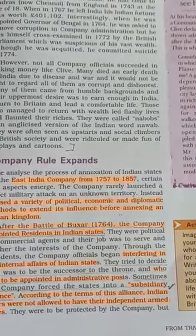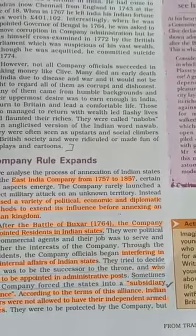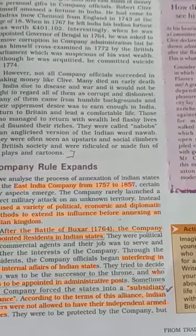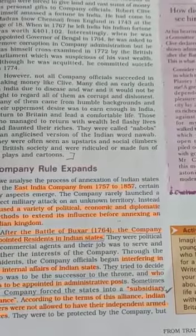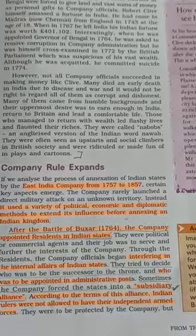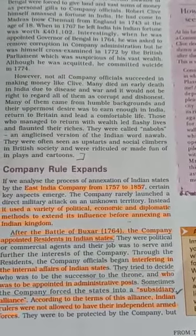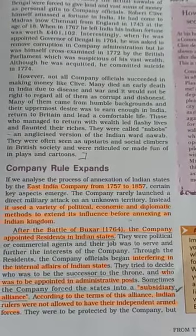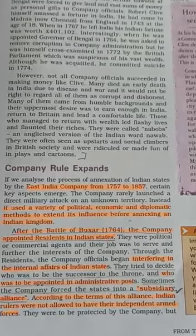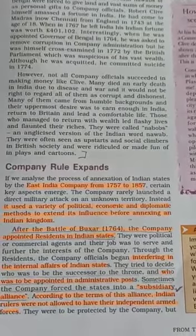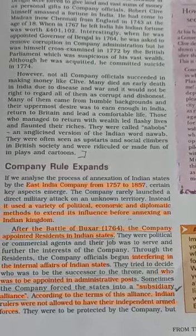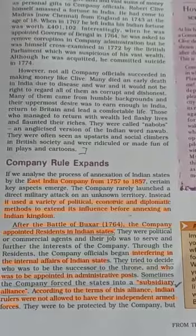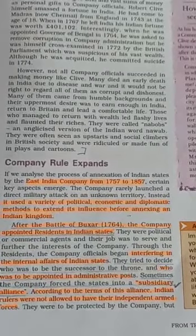Here, Company means East India Company. In this topic, we will discuss how the East India Company expanded its rule in our country. The East India Company, from 1757 to 1857, used a variety of political, economic, and diplomatic methods to extend its influence before annexing an Indian kingdom. After the Battle of Buxar in 1764, the Company appointed Residents in Indian states.